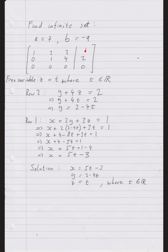My second row says y plus four times z equals two. I write that down, put in t for z, and solve: y is two minus four t. Then back to the first row: x plus two y plus three z equals one. I substitute two minus four t for y and t for z, solve the equation, and get x equals five t minus three. So the solution set is: x equals five t minus three, y equals two minus four t, z equals t, for any real number t.